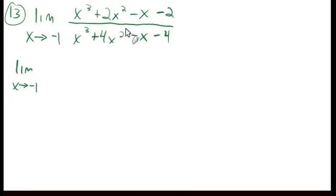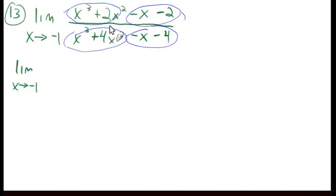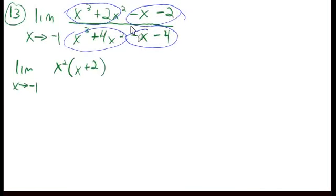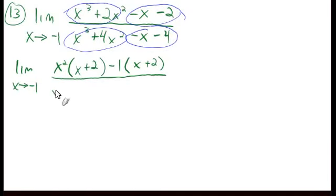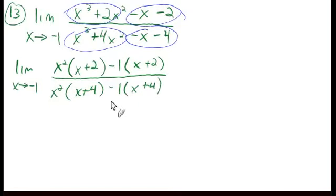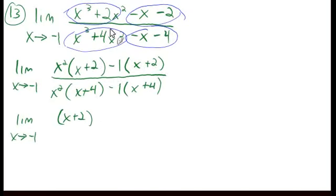So, limit as x approaches negative 1. We have four terms, and hopefully you remember grouping. We're going to group these things together and factor them by the factors they have in common. This little group here has an x squared in common, so we'll factor out an x squared — x plus 2 is left. For this group, we'll factor out a negative 1 to keep x positive, and we again get x plus 2.